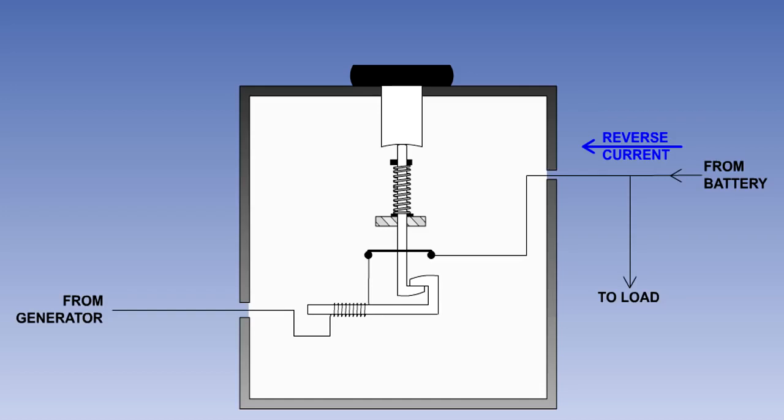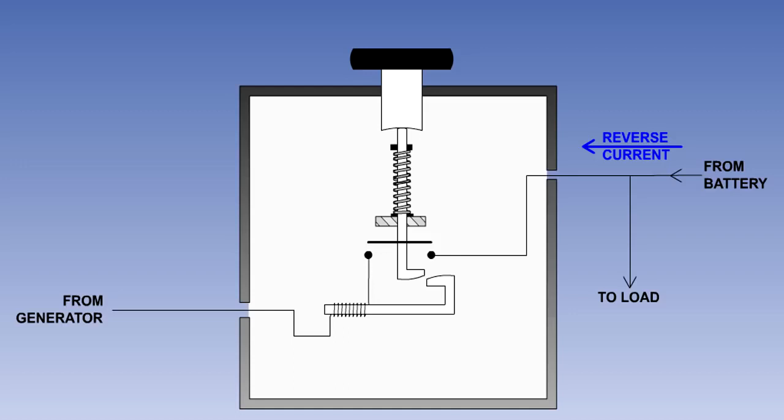However, when the current flow through the coil is reversed, its magnetic field operates in the opposite direction. At a preset current level, this field will have sufficient force to break the latch and open the contacts.